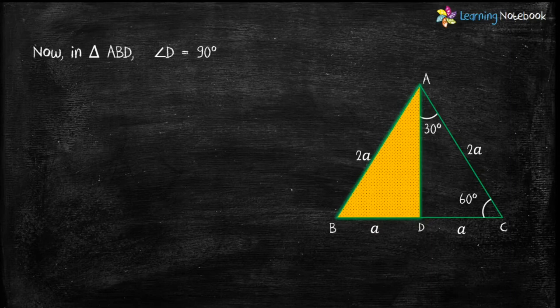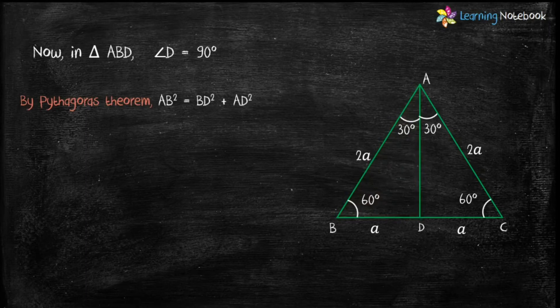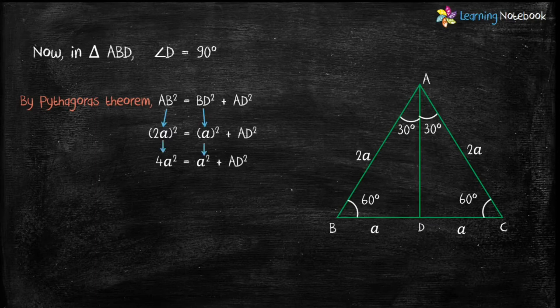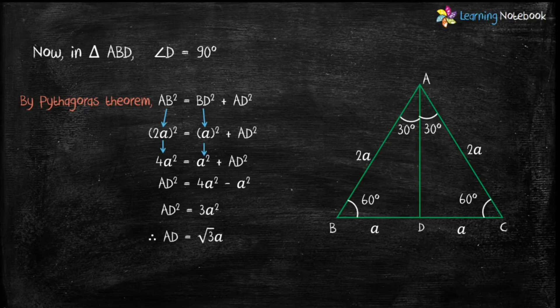Now consider right-angled triangle ABD, where angle D equals 90°. By Pythagoras theorem, AB² equals BD² plus AD². Putting the values: (2a)² equals a² plus AD², so 4a² equals a² plus AD². Therefore AD² equals 4a² minus a² equals 3a². So AD equals √3·a.